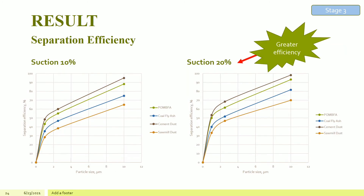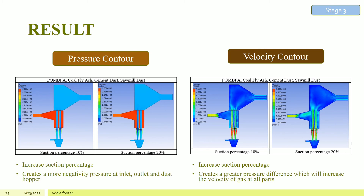From this slide, the separation efficiency of 4 different industrial particulates is compared. Both graphs show a similar trend where separation efficiency increases with particulate density. In 2014, Nora Liza conducted a study to measure the performance of a multi-cyclone called Mr. D-Duster, concluding that the performance strongly depends on particulate size distribution — the bigger the size, the greater the separation efficiency. The graphs also show an increase in separation efficiency with increasing suction percentage. Higher airflow due to higher suction creates a very high pressure difference. Since air density remains constant, no changes in pressure and velocity contour are observed across different particulates.